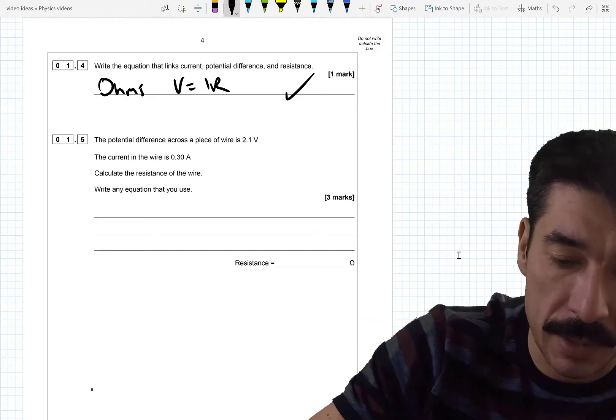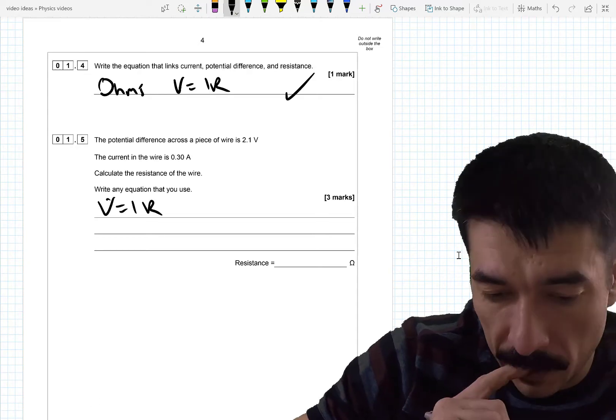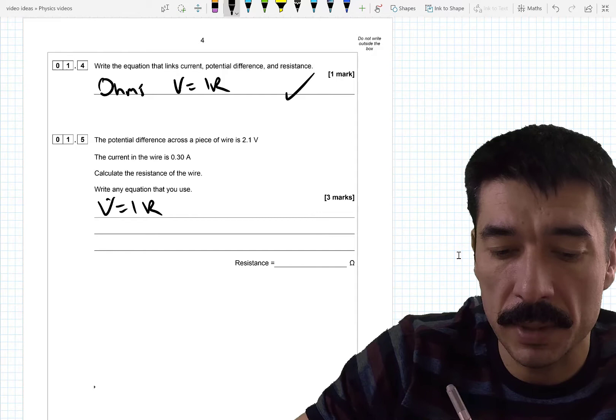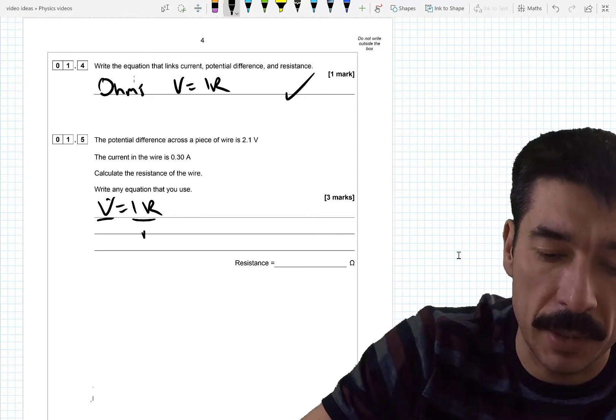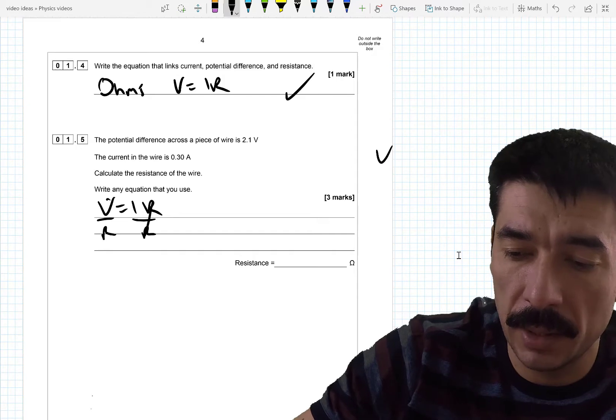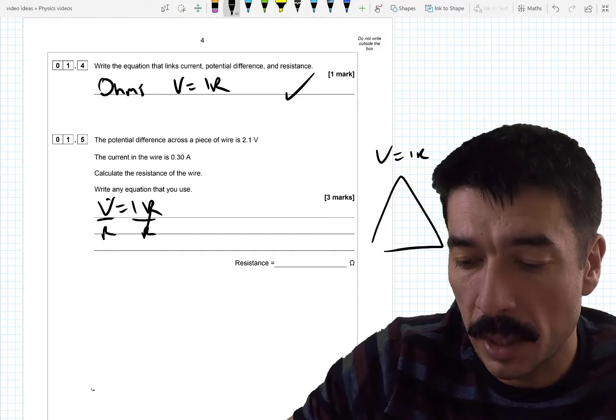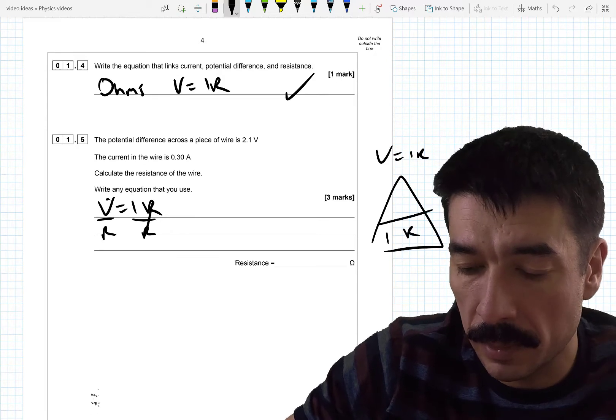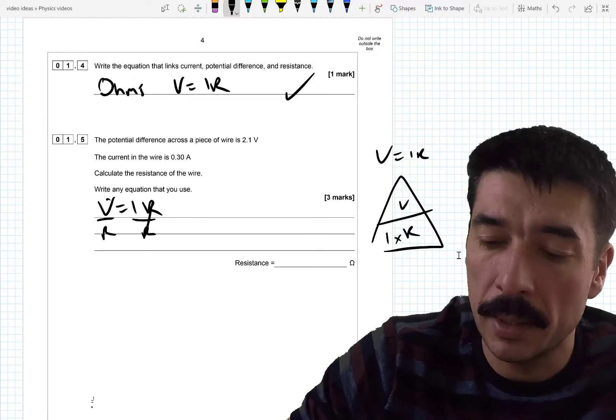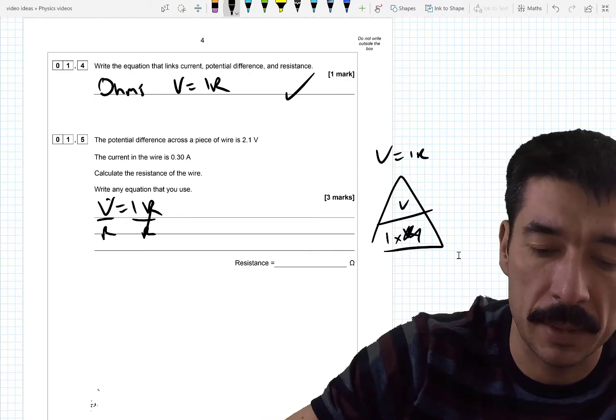So what's asking for resistance? So V equals IR. So rearrange for resistance. I personally would divide both sides by R. Which cancels here. Or if you've got V equals IR and you want it in a formula triangle. The timesing bits go on the bottom. And then the other one goes on top. And then you cover up what you want. In this case you've got V divided by I. So if I sub in the numbers.